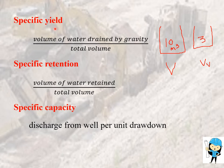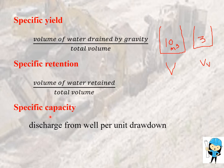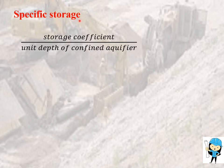The formula to calculate specific yield is volume of water drained by gravity divided by total volume. Specific retention is volume of water retained divided by total volume. If volume of water drained by gravity is 1, specific yield is 1/10. For specific retention, that is 2/10. Specific capacity means discharge from a well per unit drawdown. Specific storage is defined as the storage coefficient divided by the unit depth of the confined aquifer.